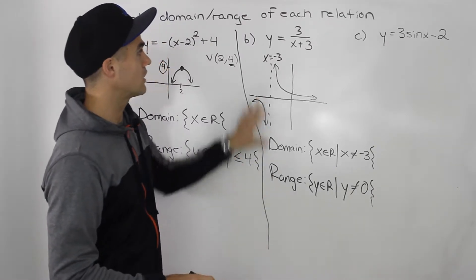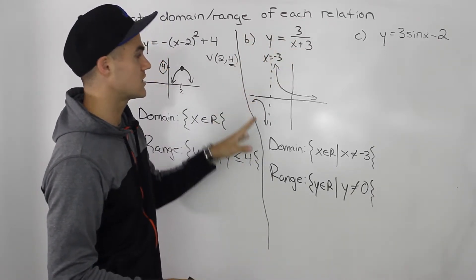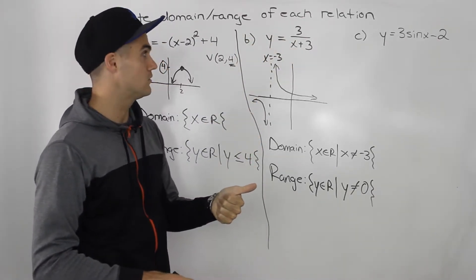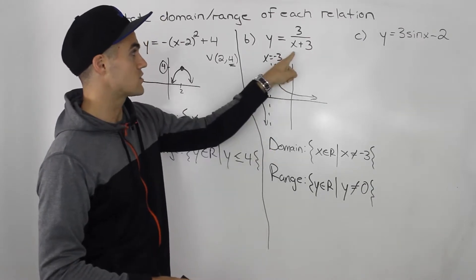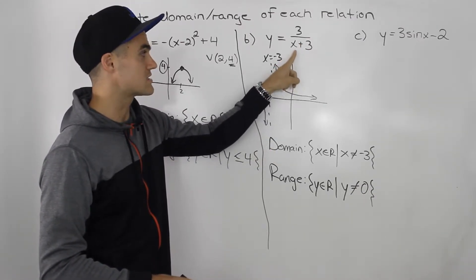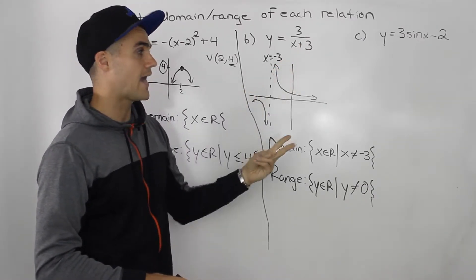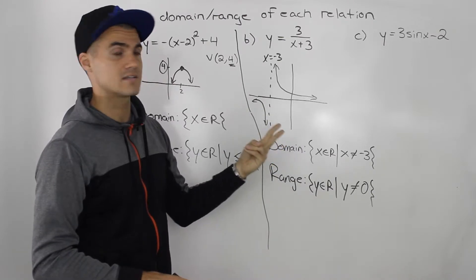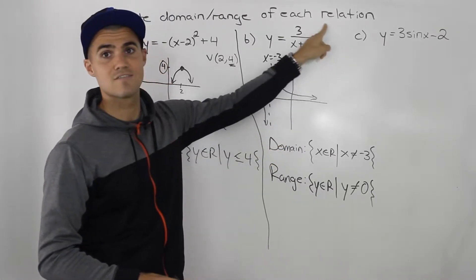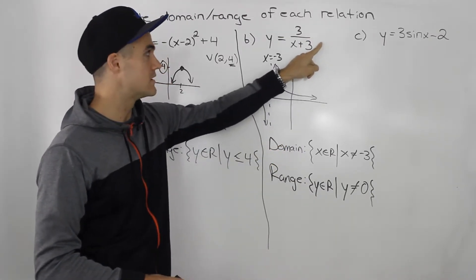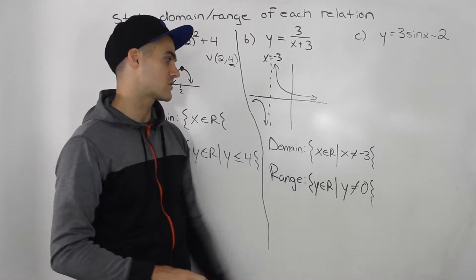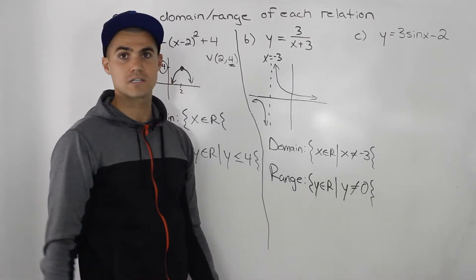Whenever you're dealing with a reciprocal function, the domain and range are always in this format: x cannot equal the vertical asymptote, and y cannot equal the horizontal asymptote. So all you have to figure out is what x value makes the denominator equal to 0, and what is the c value for the horizontal asymptote — here the c value is 0, so the horizontal asymptote is at 0.